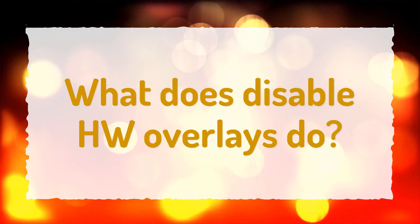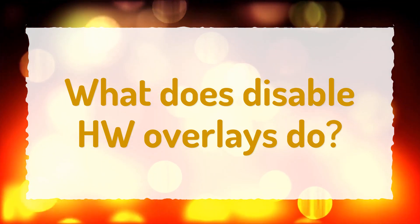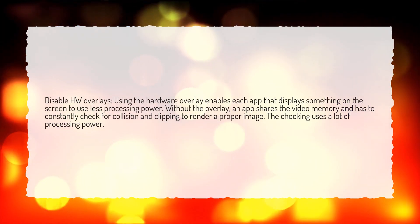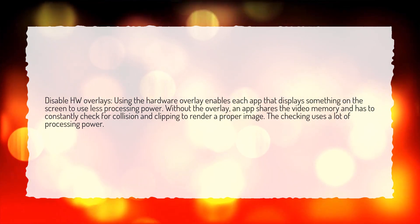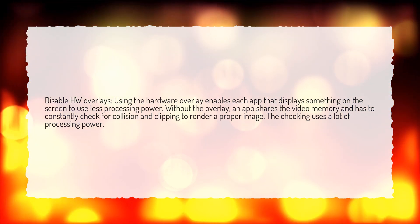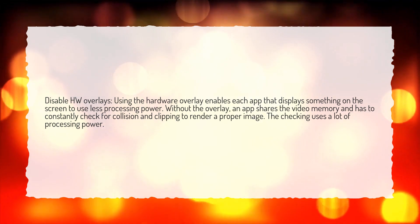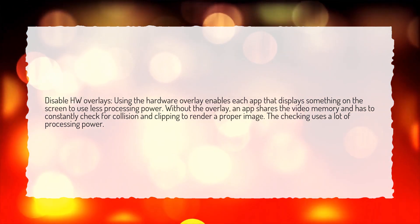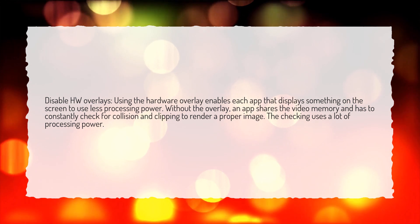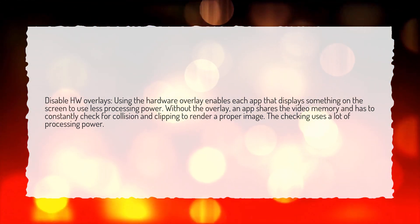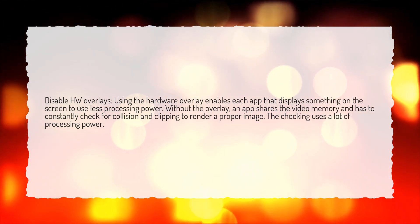What does Disable HW Overlays do? Using the Hardware Overlays enables each app that displays something on the screen to use less processing power. Without the overlay, an app shares the video memory and has to constantly check for collision and clipping to render a proper image. The checking uses a lot of processing power.